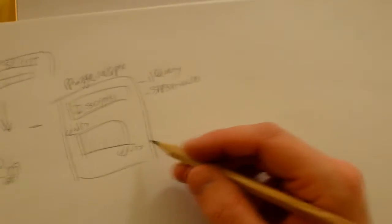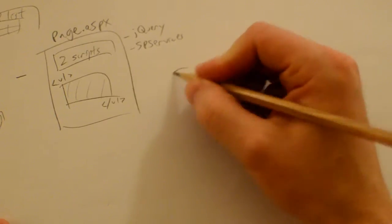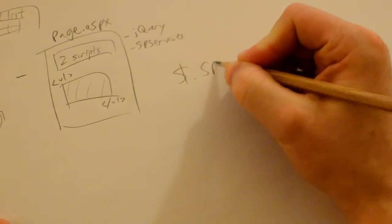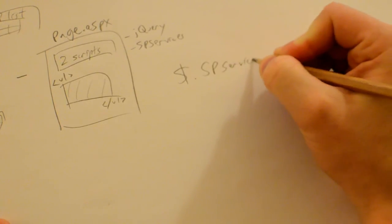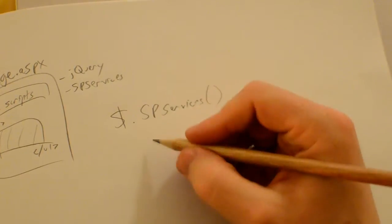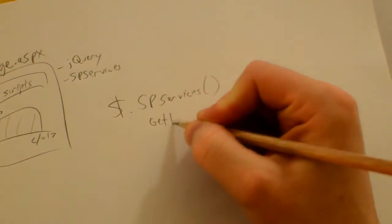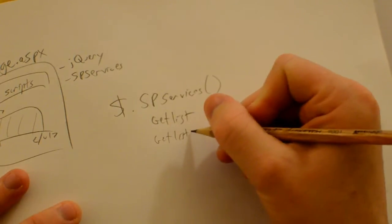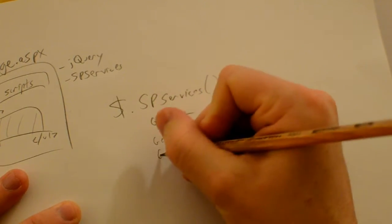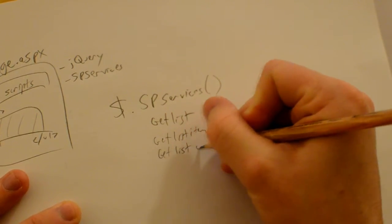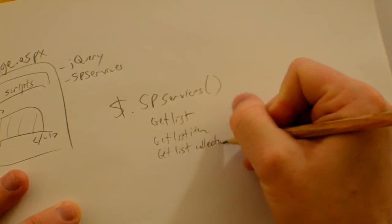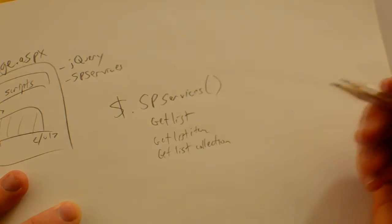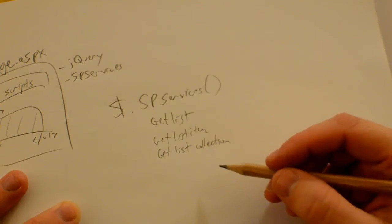Now, what SPServices is going to do is be a JavaScript function that uses operations like get list, get list item, get list collection. There's a whole bunch of them that do different stuff with pulling data from SharePoint. There's a couple of major ones that I use when I'm pulling list information.